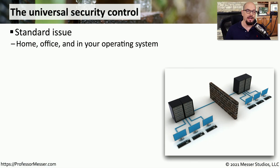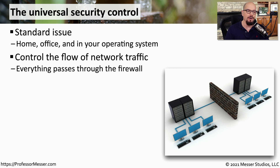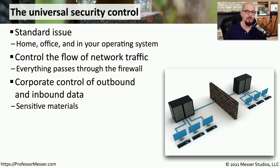If you're connected to the internet at home or in your office, then you are using a firewall to help protect your network from whatever happens to be on the internet. This is a component that allows us to control the flow of traffic — inbound traffic into your network, or traffic that we're sending out to the internet. This can be especially important in corporate environments where we want to be sure that anyone on the internet does not have access to the sensitive information on the inside of our network.